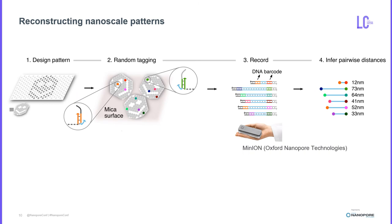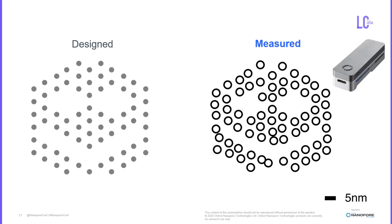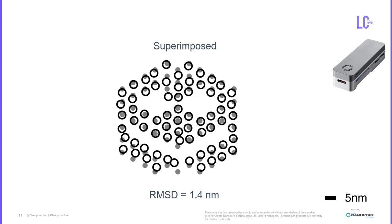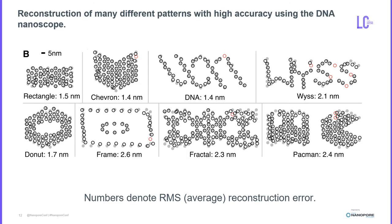From here on, we made various nanoscale patterns by first creating a design on a DNA origami, tagging them with unique DNA barcodes, measuring the pairwise distance records by MinION sequencing, and reconstructing the pattern with molecular resolution. Shown here on the left is an example of a smiley pattern designed on a DNA origami, and on the right are the results we got after sequencing and reconstructing the image. Superimposing the two images gave a root mean square deviation of 1.4 nanometers. We were able to use the DNA nanoscope and reconstruct many different patterns with very high accuracy and about 2 nanometer average error.